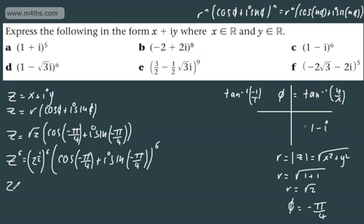We can see that z to the 6 is going to give us, using our rules of indices, 2 cubed. 2 cubed is going to give us 8. 6 times by half is 3. 2 to the power of 3 is 8. We now use De Moivre's theorem, and this is going to give me cosine of negative 6 pi by 4, which we can simplify to negative 3 pi by 2, plus i sine of negative 3 pi by 2.